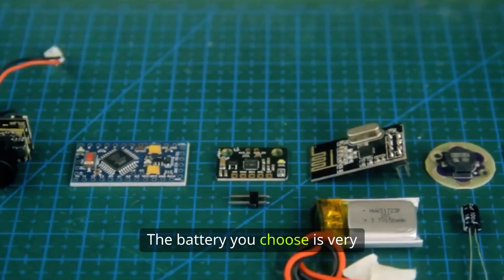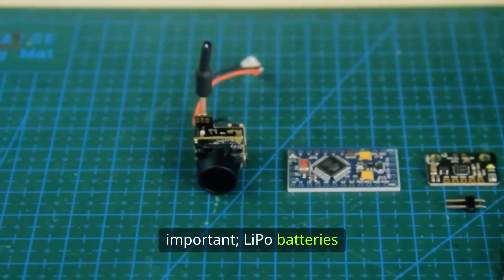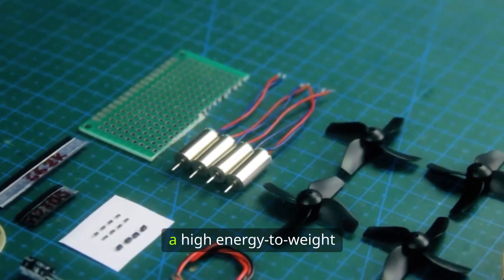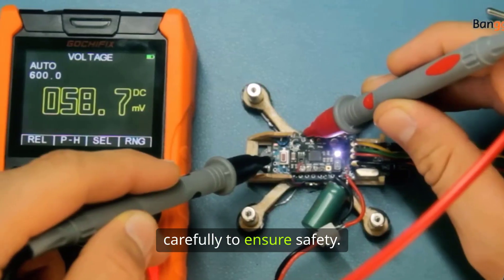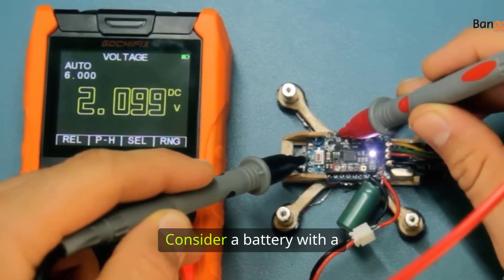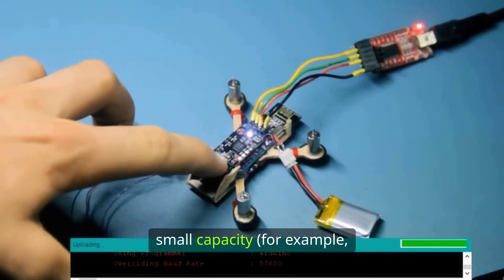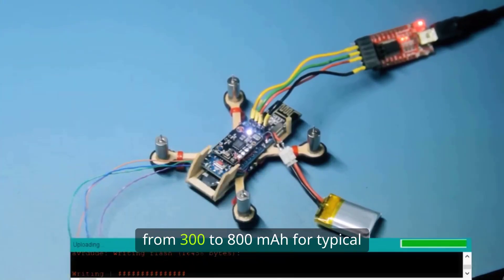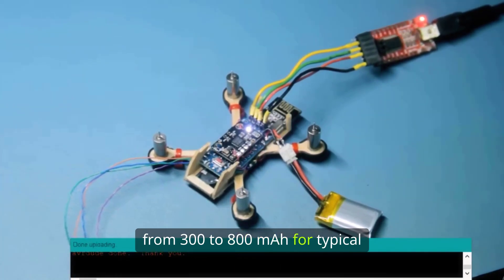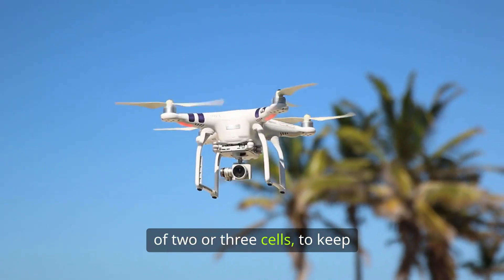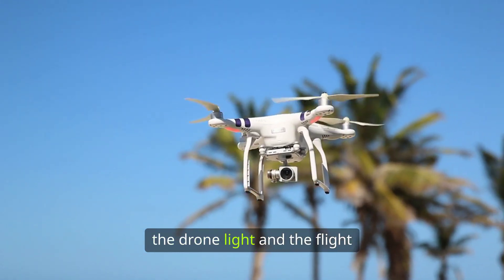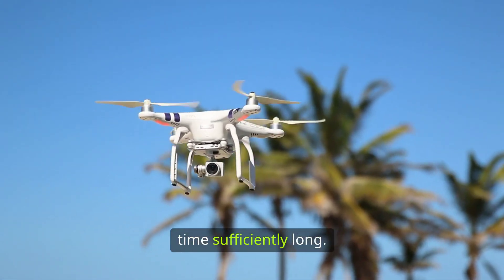The battery you choose is very important. LiPo batteries are popular because they provide a high energy-to-weight ratio but need to be handled carefully to ensure safety. Consider a battery with a small capacity, for example, from 300 to 800 milliamp hours for typical mini-drones, consisting of two or three cells to keep the drone light and the flight time sufficiently long.